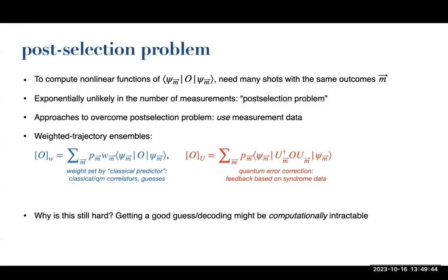What we're going to do is not tackle the post-selection problem head-on. Instead, we're going to use the measurement data in some way—not average observables, but correlate the observable that's measured with the previous measurement data from all the measurements we previously made and recorded.